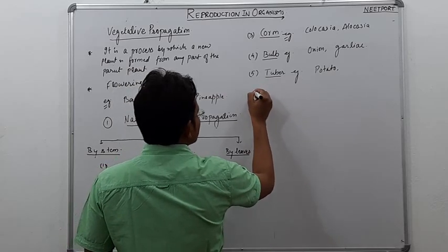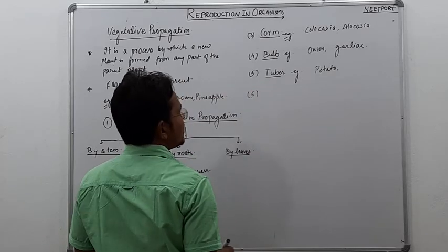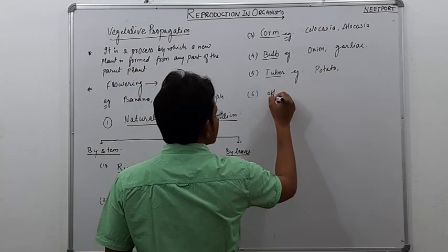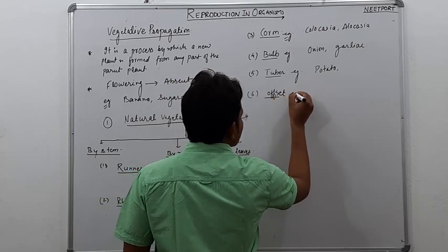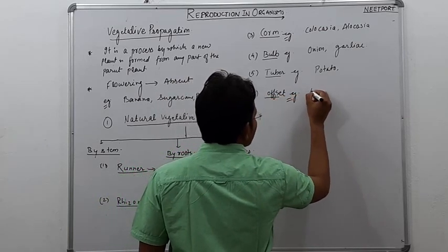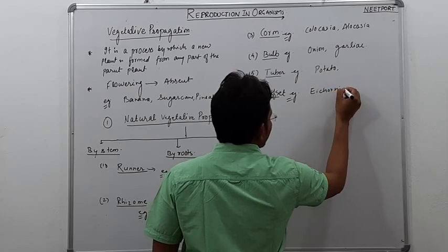The next type is tuber. This is an example of potato. And the sixth category is offset.